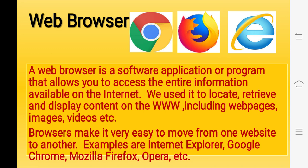Web browser — as you can see there are icons of different web browsers. A web browser is a type of application software or program that we use to get information available on the internet. We can also say it is used to access whatever resources are available on the internet. We can see information, download information, and information is displayed in the form of images and videos. Sometimes forms are available that we can fill out, and small apps that we can use online. So whatever resources are provided on a web server over the internet, we can access them with the help of a web browser.